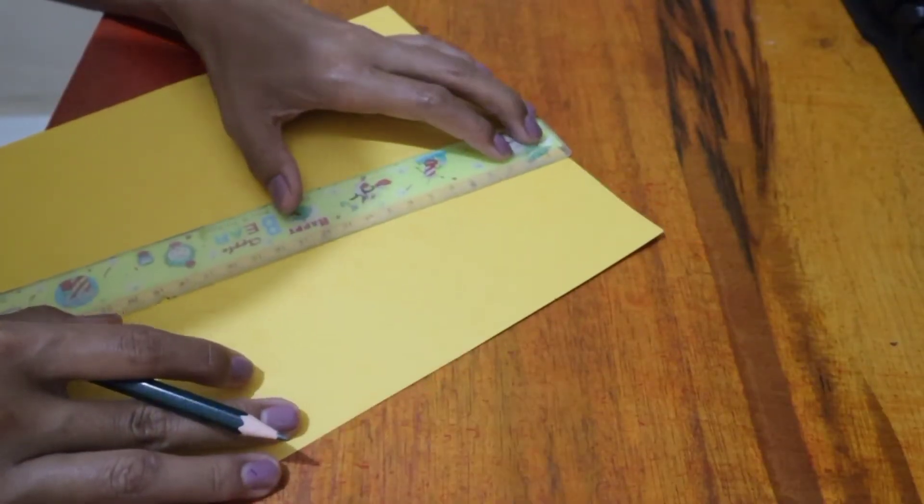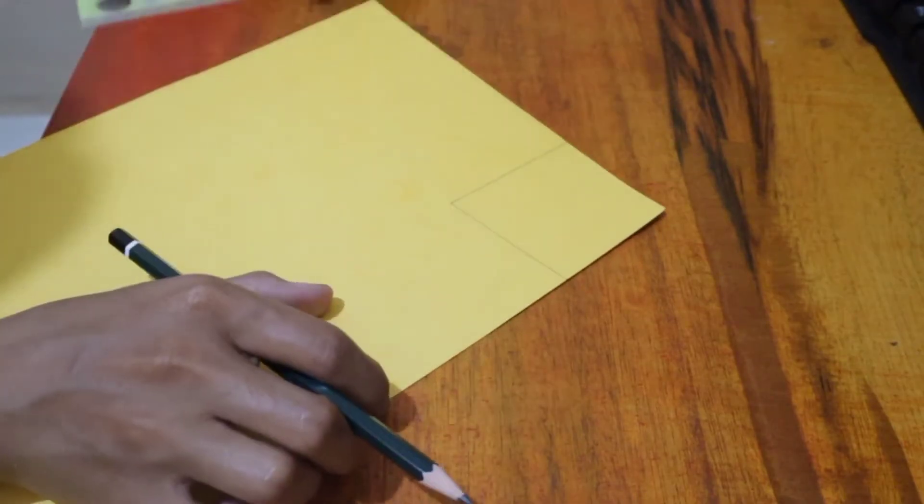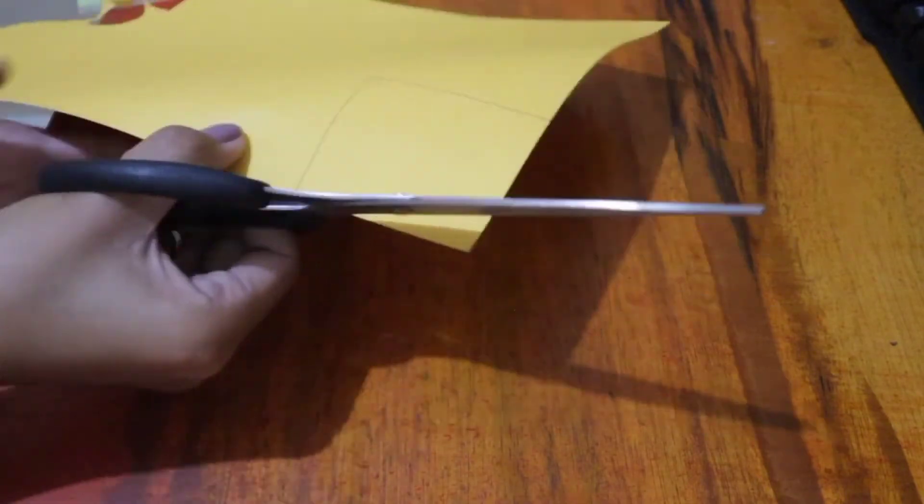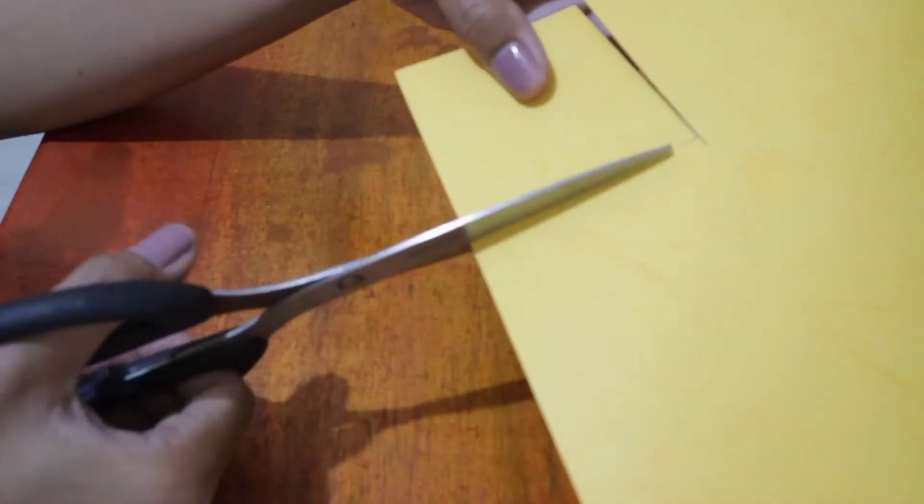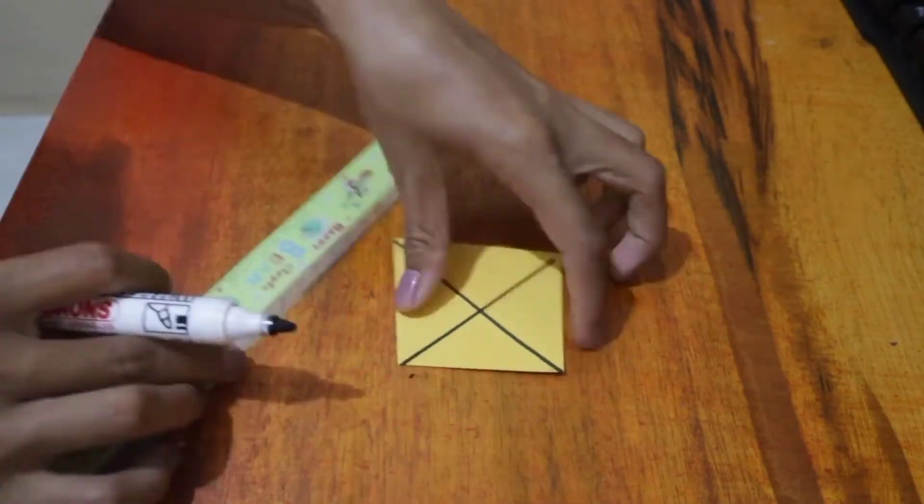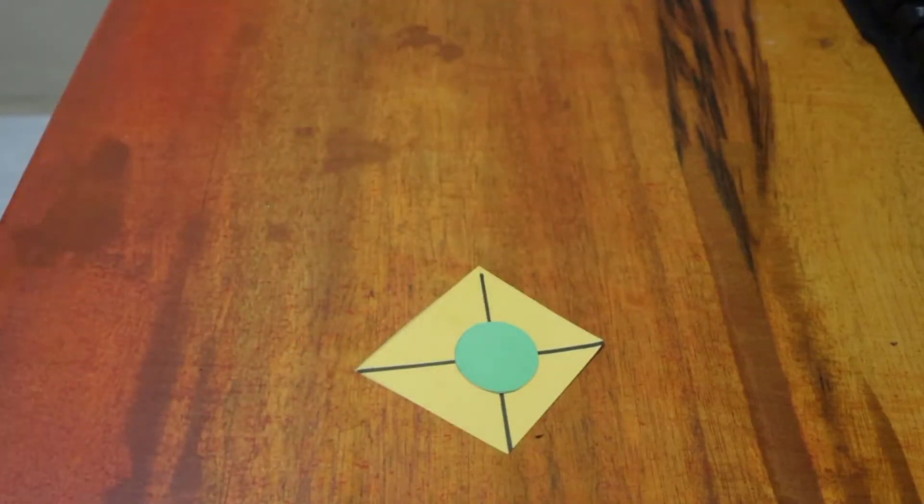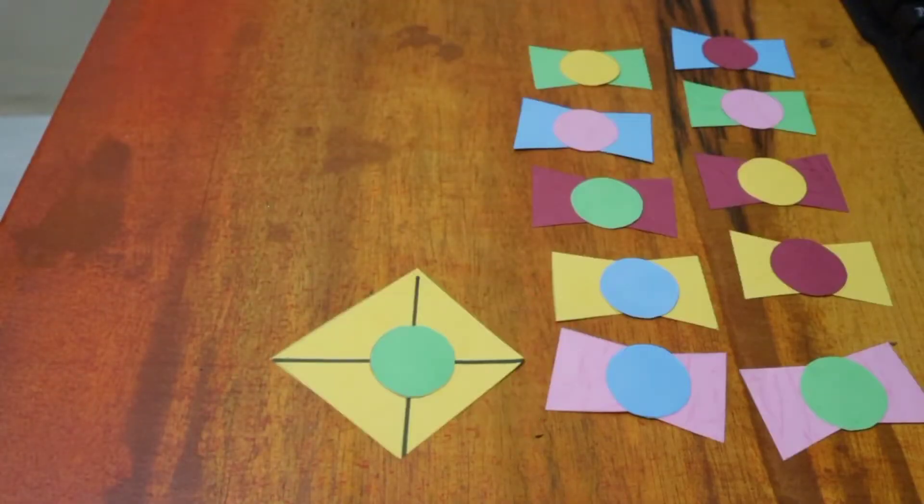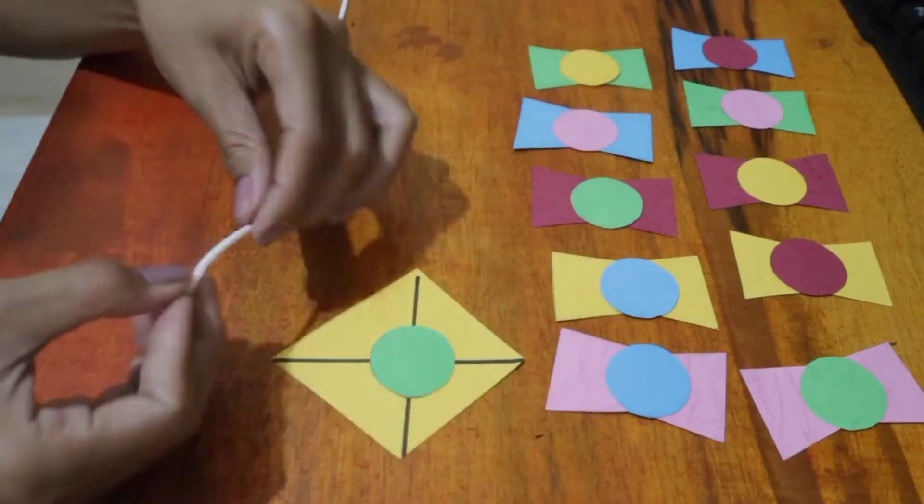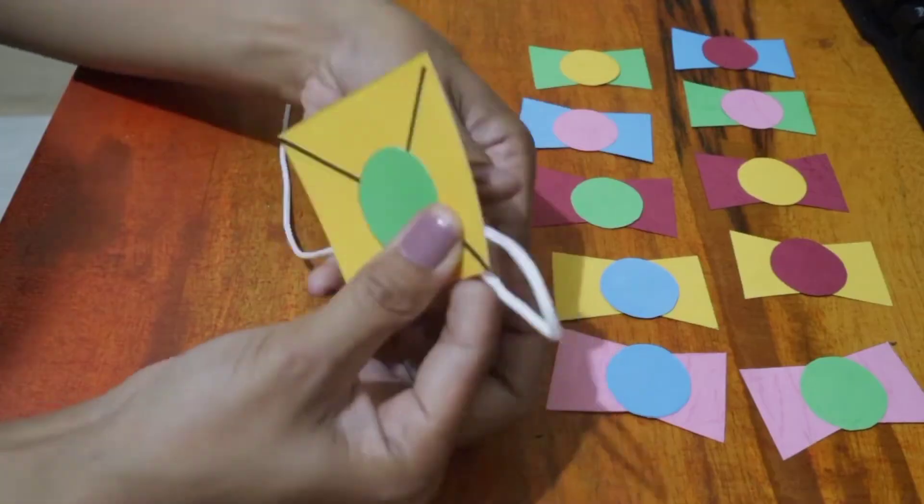Now we're going to make the kite itself. Again, you can decide the size that you want and it will be like this. And then let's make one more circle for the kite. Now stick the kite with the row like you can see in this video.